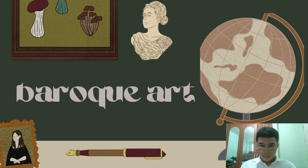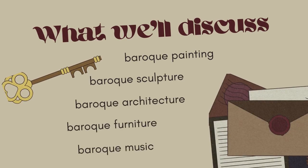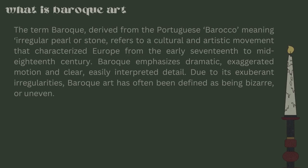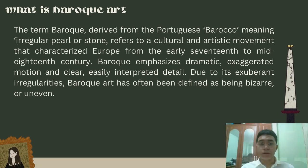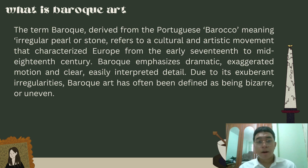Good day everyone. For this video we will be discussing baroque art. We have five variations of baroque arts, which consist of baroque painting, sculpture, architecture, furniture, and music. But before we discuss those five, we should know what baroque art is. The term baroque is derived from the Portuguese 'baroco,' meaning an irregular pearl or stone.